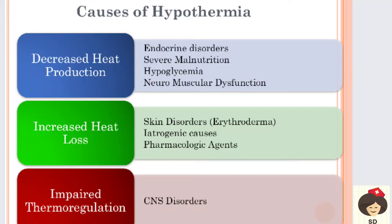Coming to the causes of hypothermia. The first cause is decreased heat production - when the body is not able to produce heat, the patient can go for hypothermia. This occurs in endocrine disorders, severe malnutrition, hypoglycemia, and neuromuscular dysfunction. The next cause is increased heat loss, where the body's heat is lost through evaporation. This can occur due to erythroderma or any skin disorders.